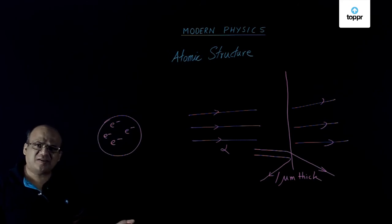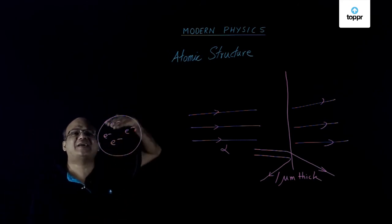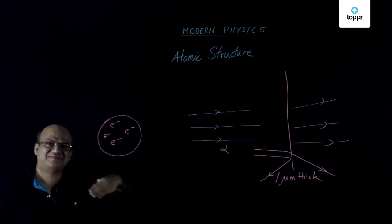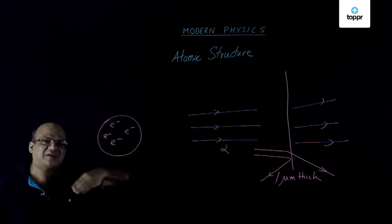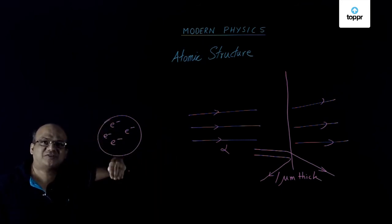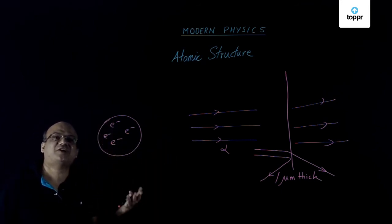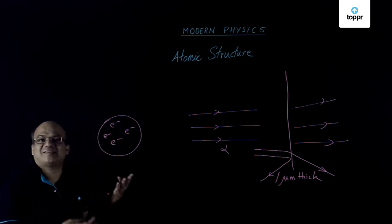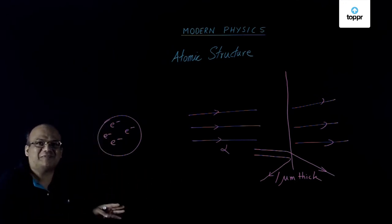Now you have to put the electrons somewhere. Where to put electrons? That idea came from the solar system. Earth is going around the sun. So electrons must be going around the nucleus. And what to do with the electrostatic force? That electrostatic force provides the necessary centripetal force.